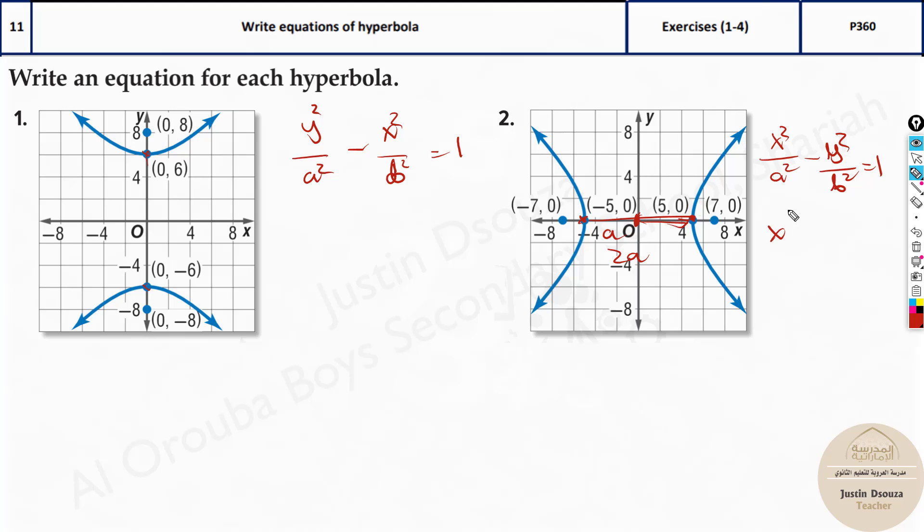So all I do is x squared by 5 squared minus what is the b squared value? This is along here, somewhere it will be something like this over here and over here that point. But we don't have that distance, right, the minor axis. It's not given.